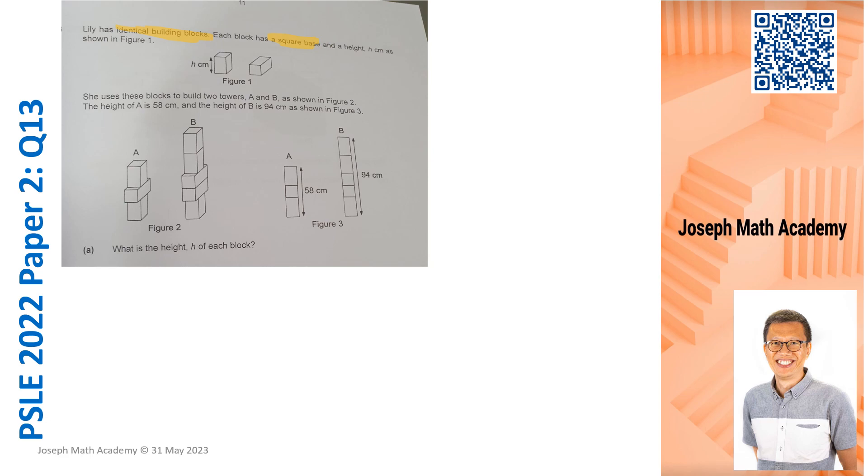But height H is different. So we cannot assume that Lily has identical cubes, no, we cannot assume that. It may be cuboids. But we are very aware that each building block has the same capacity, the same volume.